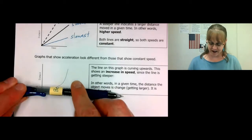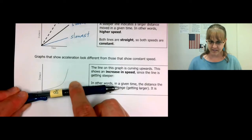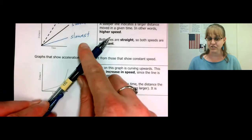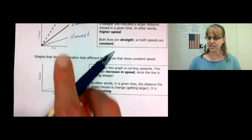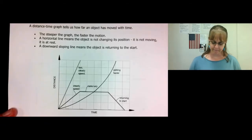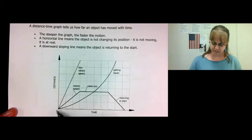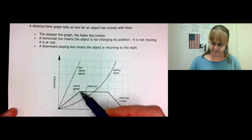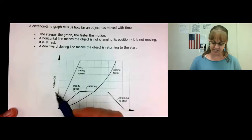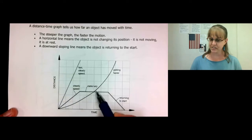Notice how this graph starts with a slope and gets faster and faster and faster as it gets steeper. So let's look at a summary of a distance-time graph. The steeper the slope, the faster the motion. So this is faster and this is slower.